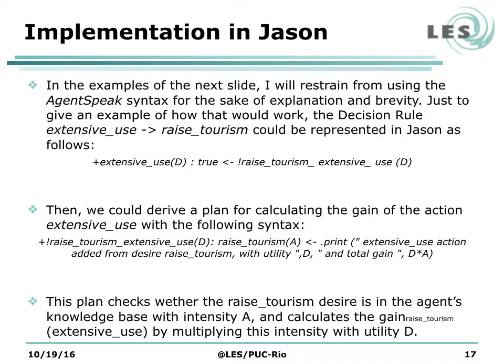In the examples of the next slide, I will refrain from using the AgentSpeak syntax for the sake of explanation and brevity. Just to give you an example of how that would work, the decision rule extensive use — raise tourism could be represented in Jason as follows. Then we could derive a plan for calculating the gain of the action extensive use. This particular plan checks whether the raise tourism desire is in the agent's knowledge base with intensity A, and calculates the gain of the action extensive use regarding the raise tourism desire by multiplying this intensity with the utility D of the action.